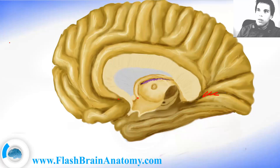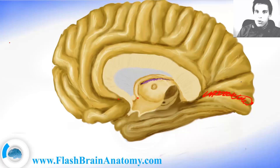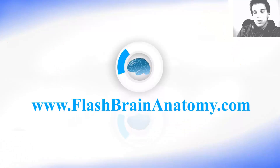The cortex around the calcarine fissure is important for the visual functions of the brain. It is important only for receiving the visual signal — not for connecting with experiences and remembering visual signals from the past — but just for receiving the visual signals. However, there are other areas that are important for recognizing the things that are seen and so on.